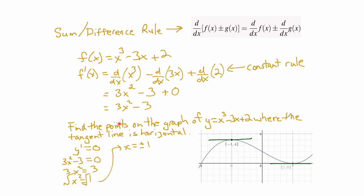Now we're asked to find the points, so we need to find the y values. We substitute x equals plus or minus 1 into the original equation. When x equals 1, that gives 1 minus 3 plus 2, which is 0, giving us the point (1, 0). When x equals negative 1, we get negative 1 cubed which is negative 1, minus 3 times negative 1 is positive 3, plus 2 gives us 4. So the tangent line is horizontal at the points (1, 0) and (−1, 4).